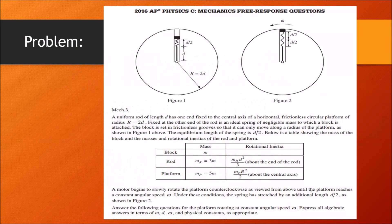This question is about a circular platform with a uniform rod of length D, with one end fixed to the central axis of the platform. Inside the rod there is a spring, and attached to one end of the spring is a block. At equilibrium, the spring is stretched by a distance of D over 2. The platform then starts rotating with a constant angular speed omega, and the spring stretches an additional D over 2 so that the block touches the exterior of the platform. A table is also provided giving the moment of inertia of the rod and platform.